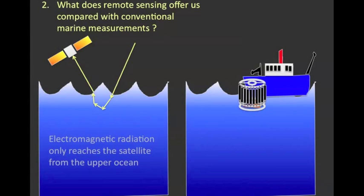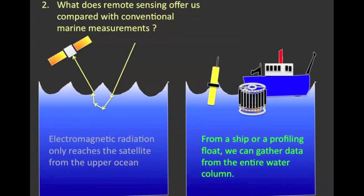If we take a ship to a particular sampling location, we can lower instruments right through the water column. And the Argo profiling floats profile every few days and transmit every few days. So from a ship, we can see the whole of the water column.